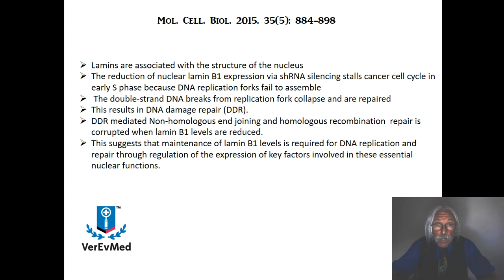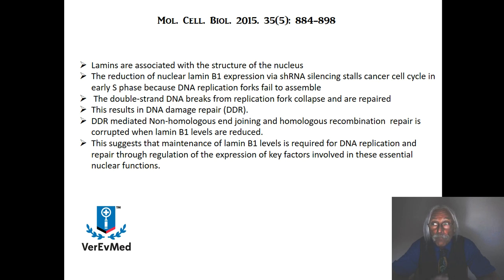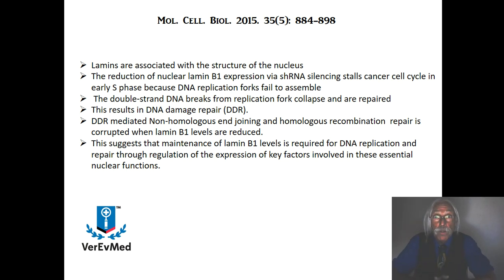When they used shRNA to silence this lamin expression, great news: it stalled the cancer cell cycle in the early S phase — that's the synthetic phase, the DNA replication phase. They determined that this happens because during DNA replication there's something called a DNA replication fork — that's where new DNA is being made. When you decrease Lamin B1 production using shRNA, those replication forks fail to assemble.